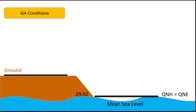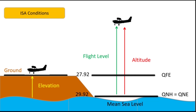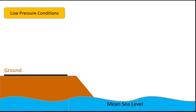Under ISA conditions at mean sea level, QNH and QNE are the same, therefore the altitude and flight level will be the same. Using this setting, the altimeter on the ground will indicate the elevation of that particular airport. In standard conditions, if the barometric pressure on an airfield is 27.92 inches of mercury and the pilot sets that value as the barometric reference, the altimeter will indicate height above the ground.